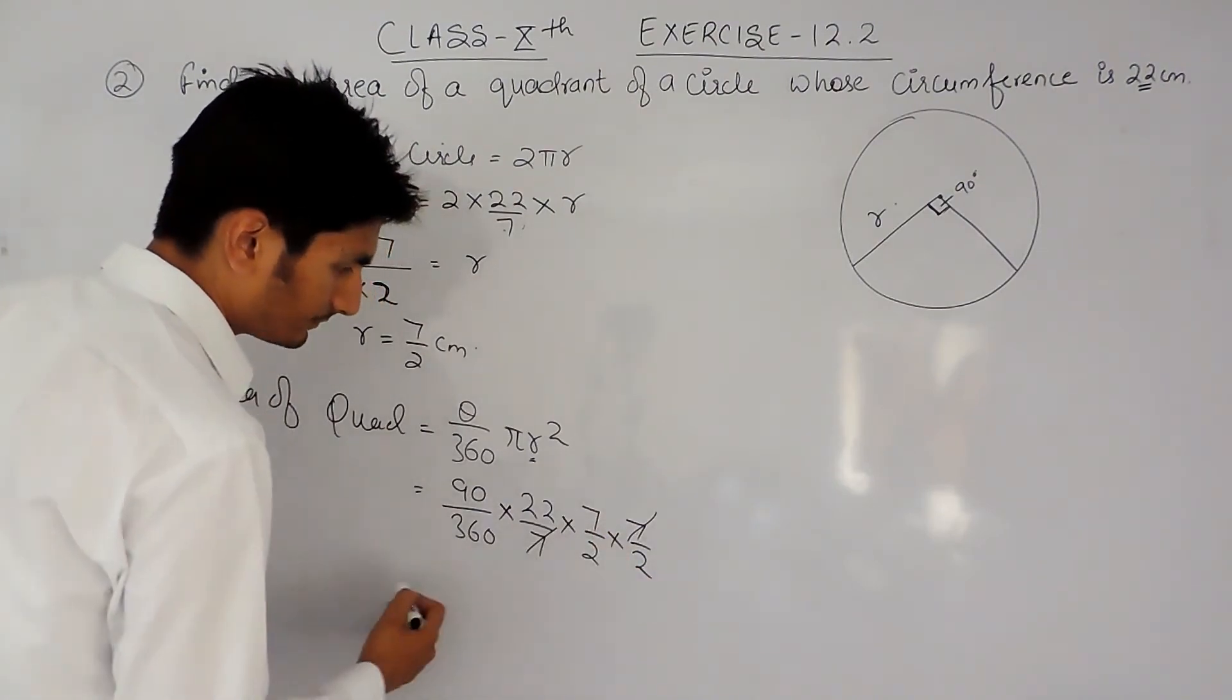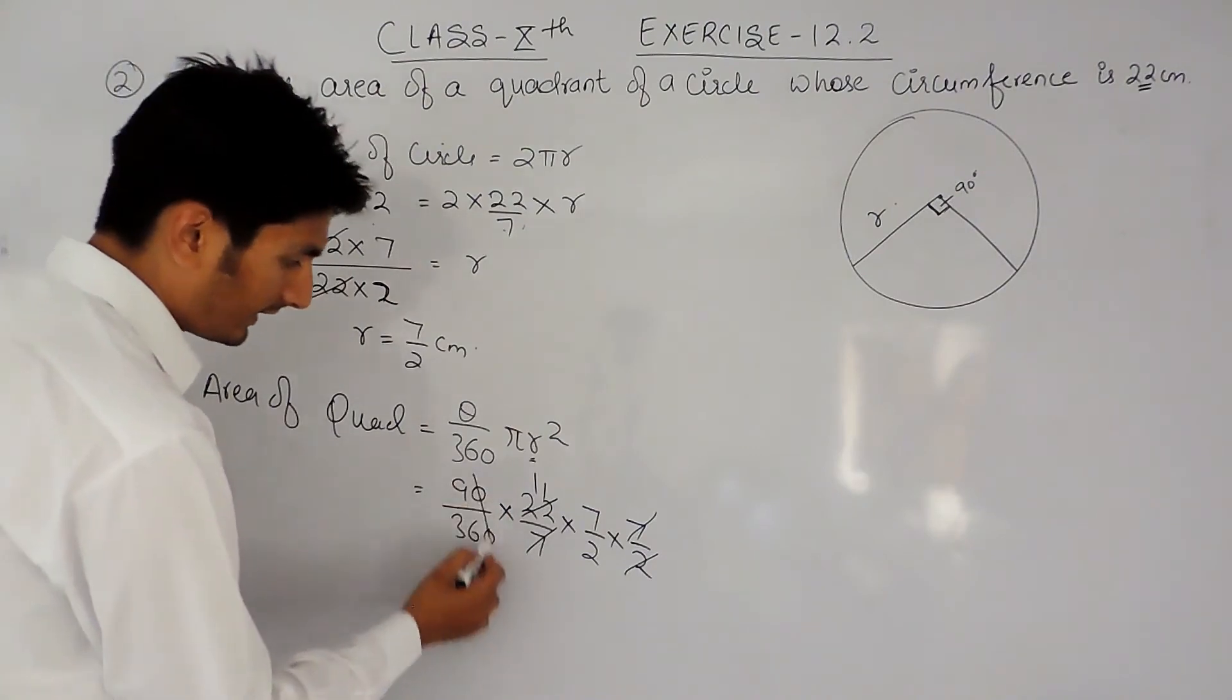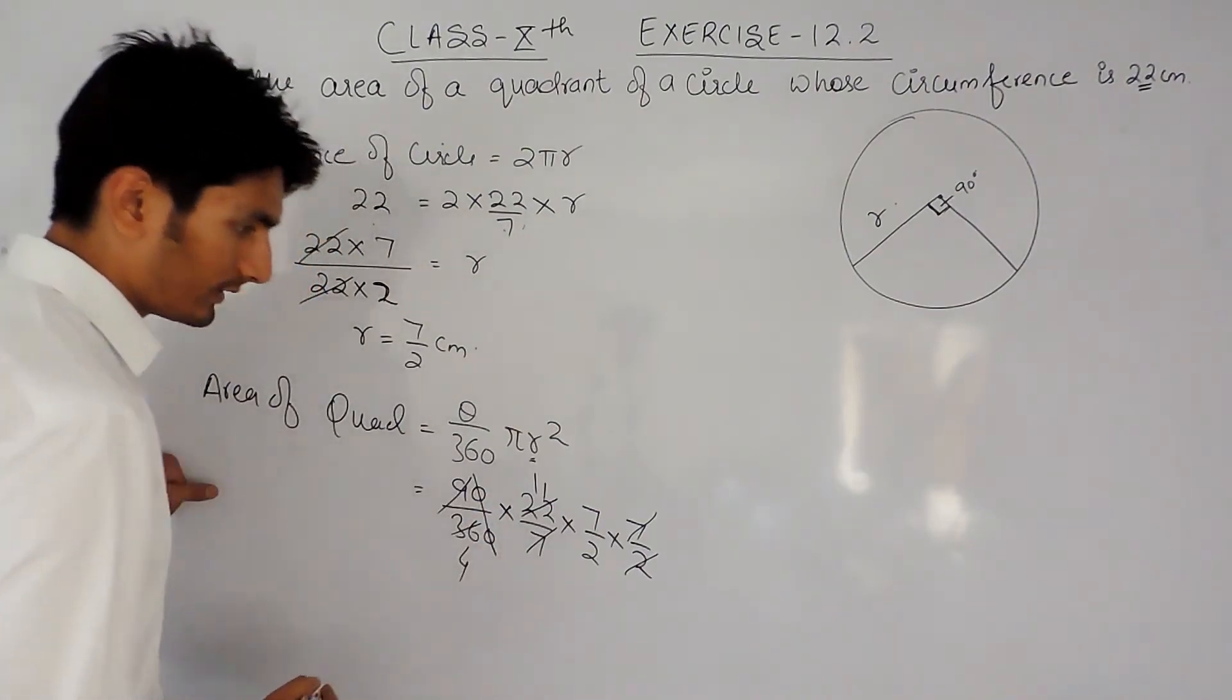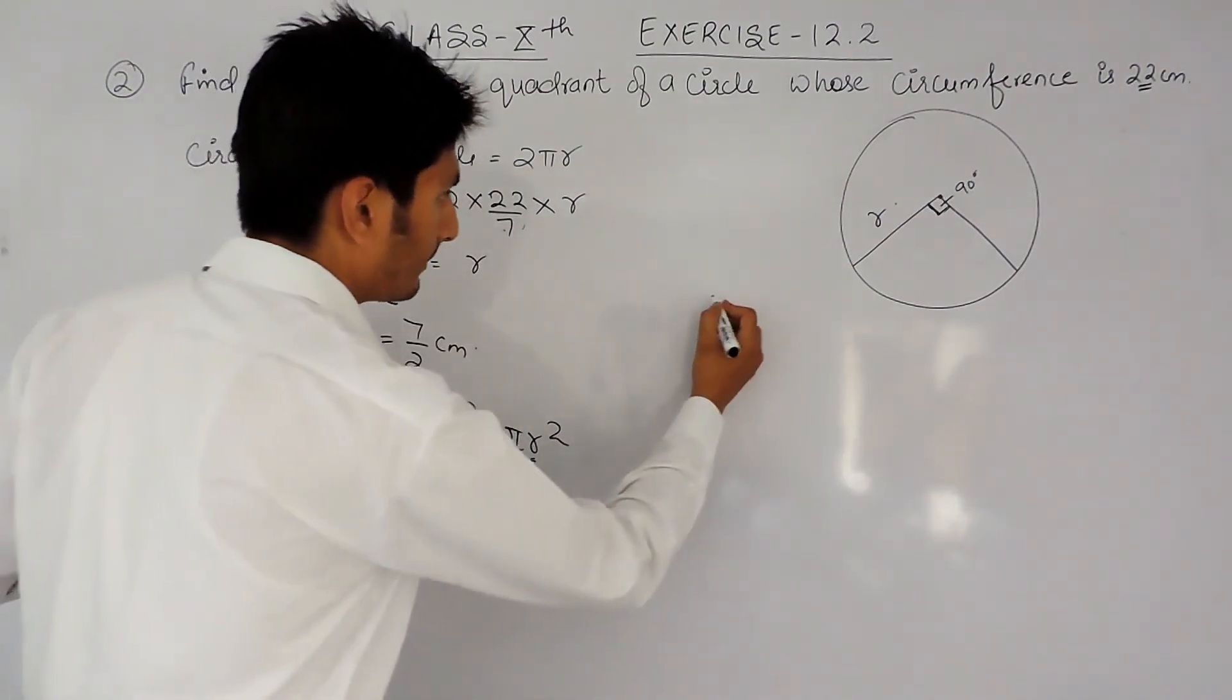So 7 can be cancelled with this, 11 times, 9 can be cancelled, and this can be cancelled 4 times. So when I multiply this, 11 will be multiplied by 7.